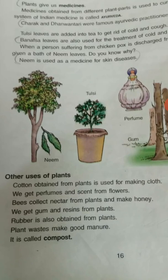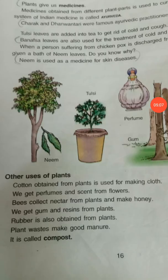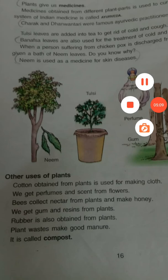Plant waste makes good manure. Vegetable peels, leaves falling on the ground — when collected in a pit, they become compost and are very useful for the growth of plants. Try to make a pit and make compost. Take the help of your parents for the same.